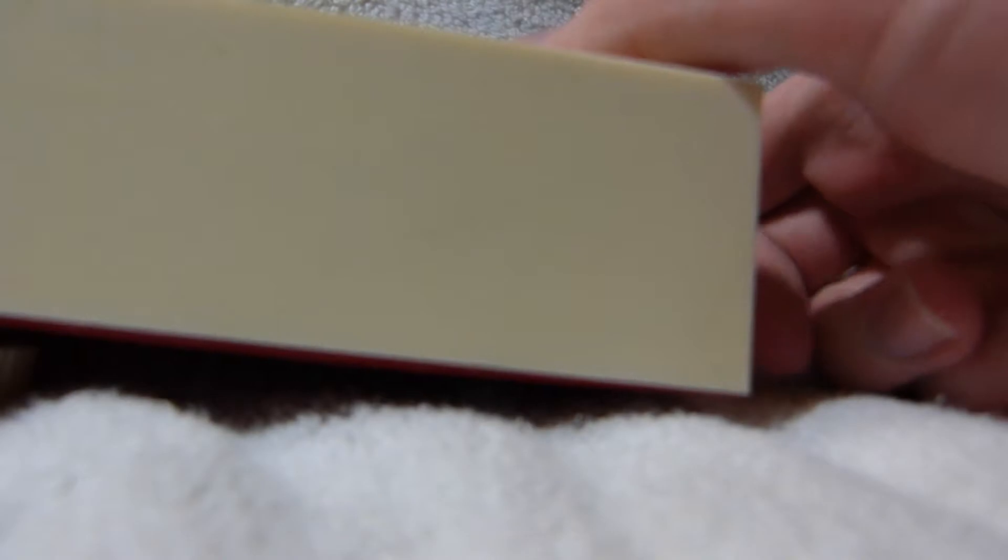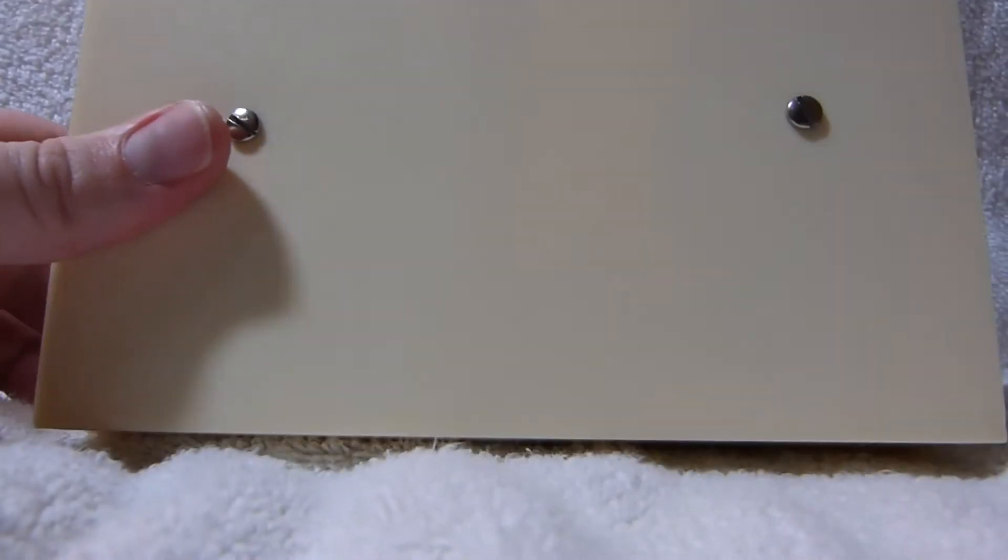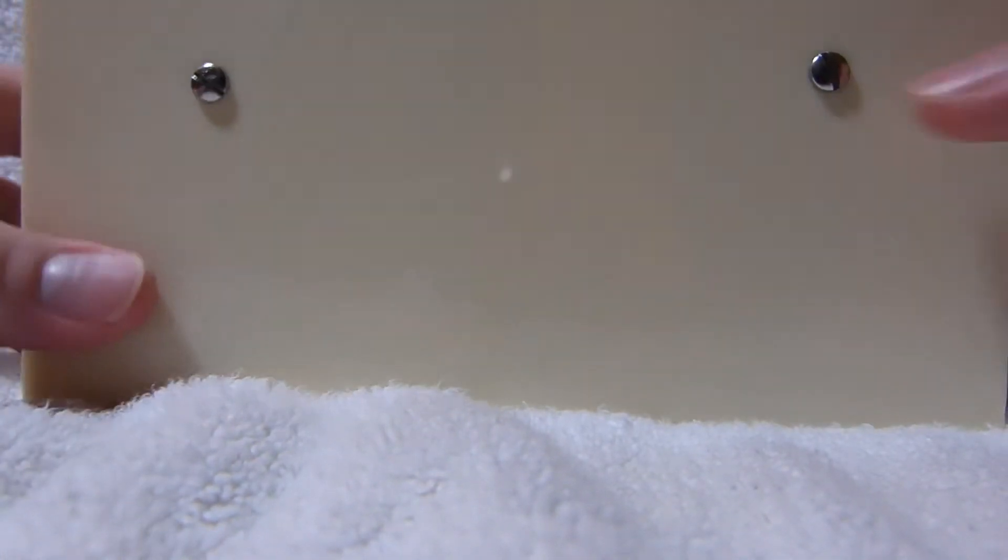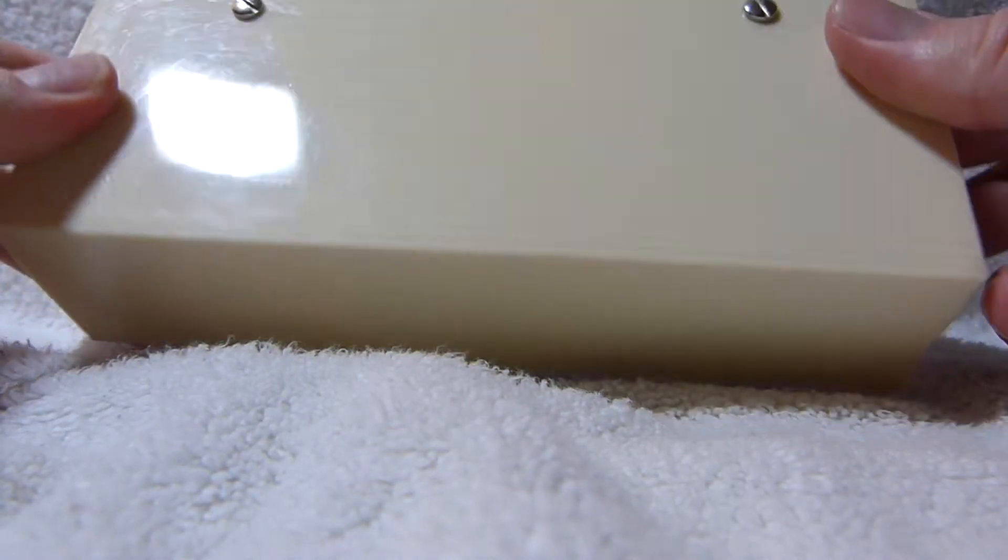One other weird thing: for some reason, instead of drawing the nine volt battery like a normal nine volt battery, they drew it like those 45 volt B batteries—like the long ones that are like an extended nine volt battery. There's another weird thing I noticed down there.